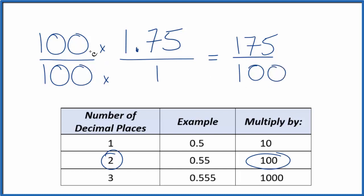Really, all we did here—100 divided by 100—that's just 1. So we just multiplied by 1; we didn't change anything. But now we have fraction form.